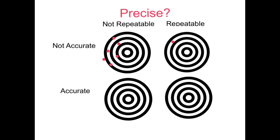In the second example, maybe I take six measurements and they all land right here. Again, those measurements are not accurate — they're not landing in the bullseye. But they are repeatable. If I were to take a seventh measurement, more than likely it's going to land right there. So it's repeatable, but it's not very accurate.